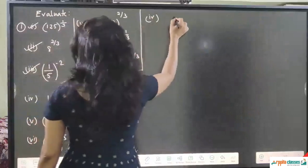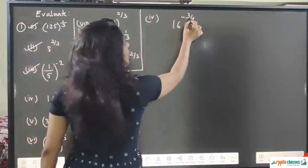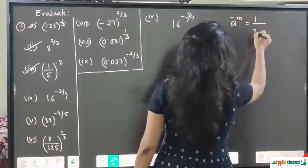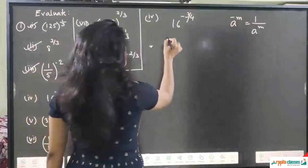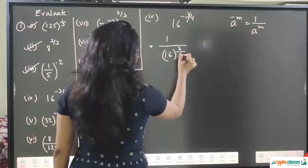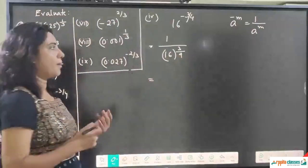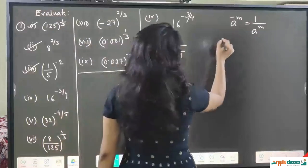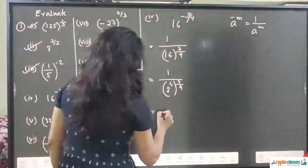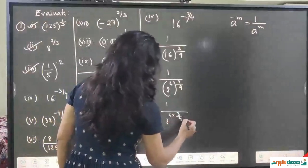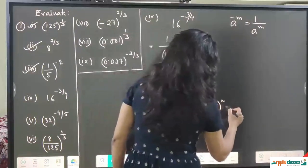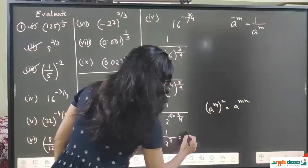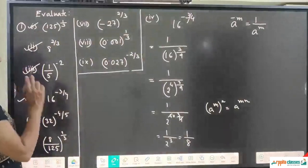Question 4 is 16 to the power minus 3/4. Since the power is negative, using a to the power minus m equals 1 upon a to the power m, we write 1 upon 16 to the power 3/4. Now 16 = 2⁴, so this becomes 1 upon (2⁴) to the power 3/4. Applying a to the power m whole to the power n equals a to the power m × n, we get 1 upon 2 to the power 4 × (3/4). The 4s cancel, giving 1 upon 2³ = 1/8.